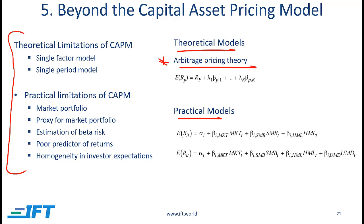Under Arbitrage Pricing Theory, the expected return is based on different risk premiums. Lambda 1 is the risk premium associated with factor 1, lambda k is the risk premium associated with factor k, and so on. The betas represent the sensitivity of a portfolio to a given factor. Arbitrage Pricing Theory is somewhat similar to CAPM in the sense that there is a linear relationship between risk and expected return.